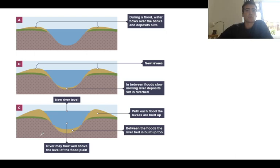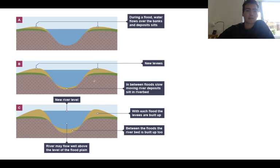A levee is formed usually during a flood. During a flood, water flows over the banks and drops sediment off as soon as it starts to flood. Each time there's a flood, these levees get a little bit higher and higher, until eventually they are much higher than they used to be, and the river can actually hold a little bit more water, which helps stop future floods.